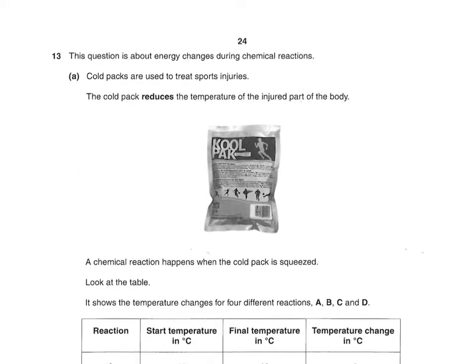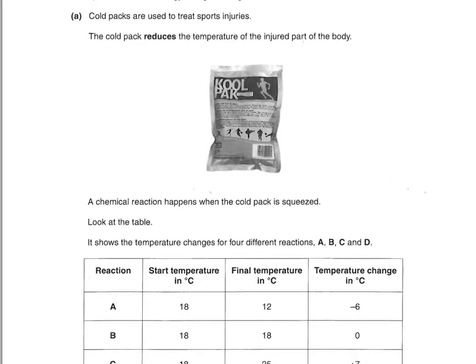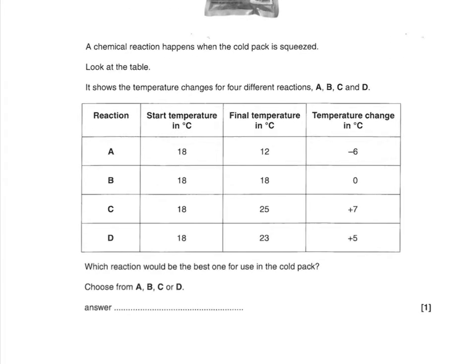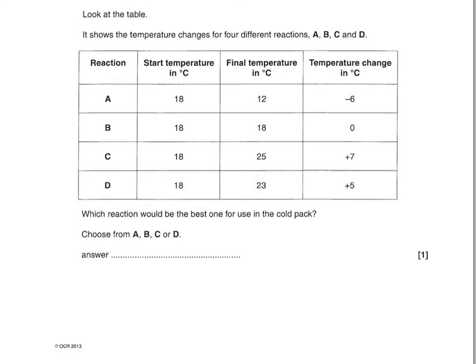This question is about energy changes during chemical reactions. Cold packs are used to treat sports injuries — a chemical reaction happens when the cold pack is squeezed. The table shows temperature changes for four different reactions A, B, C, and D. Which reaction would be best for use in a cold pack? The best one is A, because it has the biggest temperature difference and the lowest final temperature.